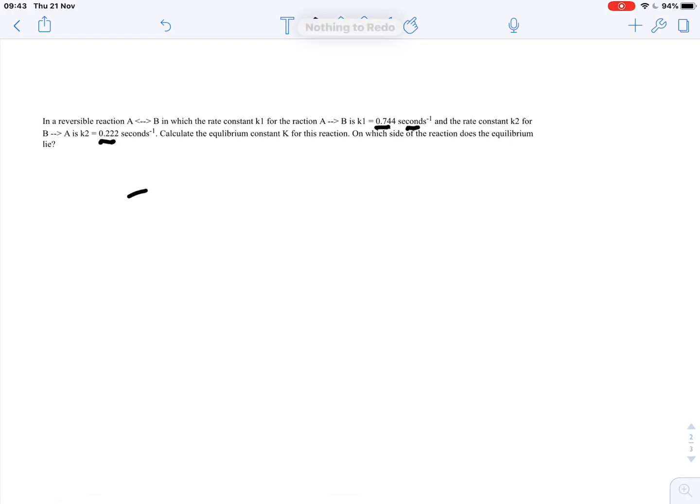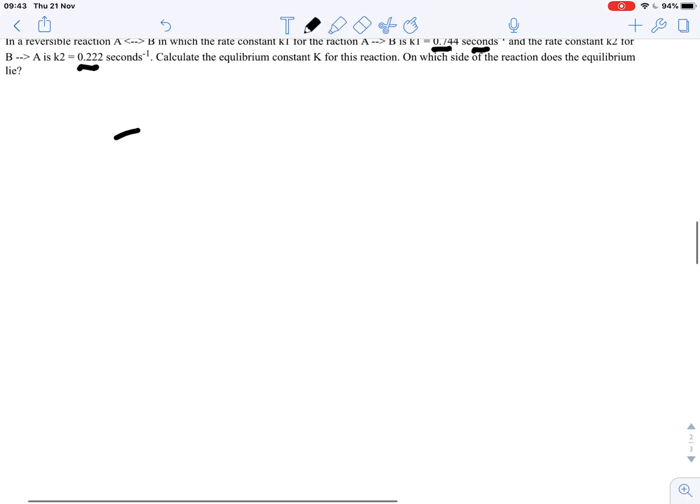So what have we got? We have reaction A is converted into B, and for which the equilibrium constant would be B over A. So that would be our equilibrium constant.